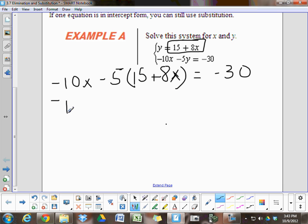So, let's go ahead and distribute the negative 5. Negative 5 times 15 is negative 75. Negative 5 times 8 is negative 40. Don't forget the x.